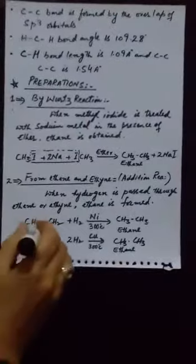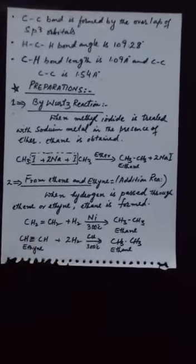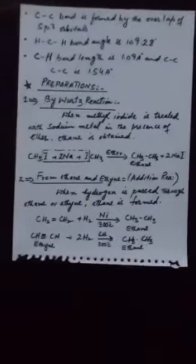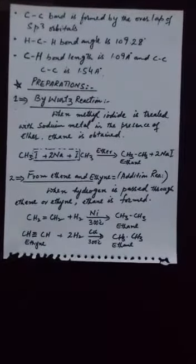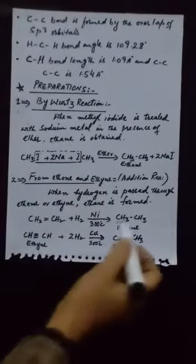When ethene reacts with hydrogen in the presence of nickel, here nickel is used as catalyst at about temperature 300 degree centigrade to produce ethane.